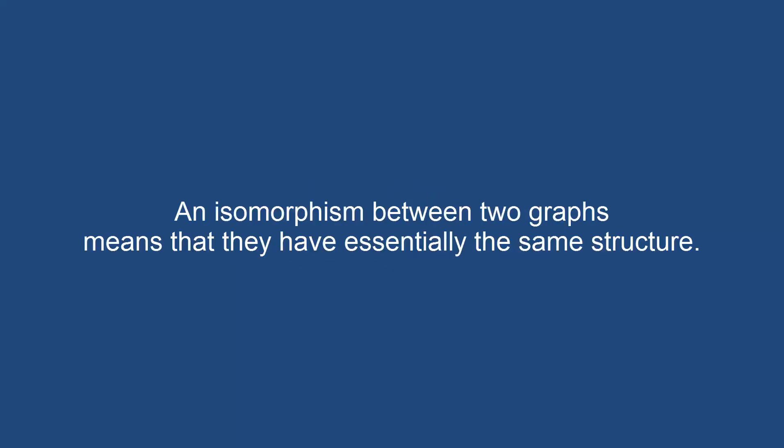In this video, we're going to look at what it means to have an isomorphism between two graphs. An isomorphism is our way of saying that two graphs are equivalent.